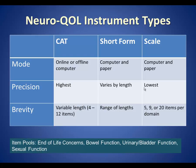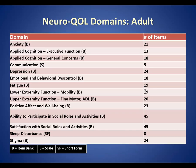CATs are administered adaptively, with participants receiving a variable number of items and item content. A short form is a fixed length with all participants responding to the same items. Here is a list of the available adult measures and the type of instrument they are.